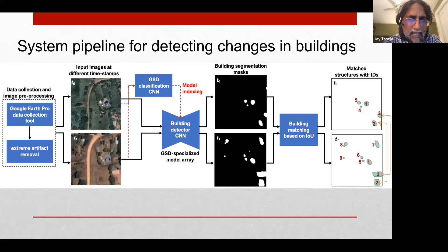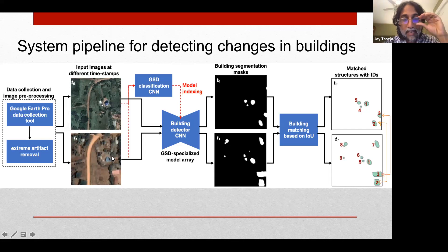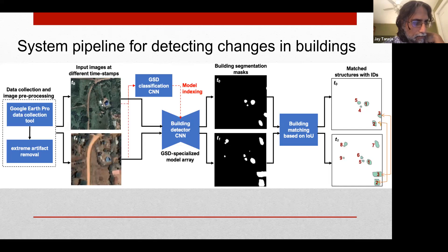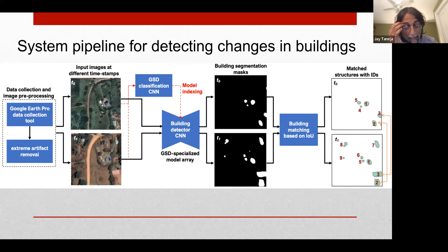Thinking about what this looks like in a systems context, we have a pipeline that tries to move from raw imagery into an understanding of where buildings are over time. The raw imagery has some processing to get rid of extreme artifacts where clouds or other artifacts prevent us from using that imagery at all. We move towards processing imagery from different timestamps. I'll discuss the GSD classification in a minute — this is a way to work with the metadata shortage that we have. The steps are essentially to detect all our buildings, make a mask, compare that mask to ground truth for validating our approach, and then look at changes in buildings over time so we can understand what that tells us about these settings.